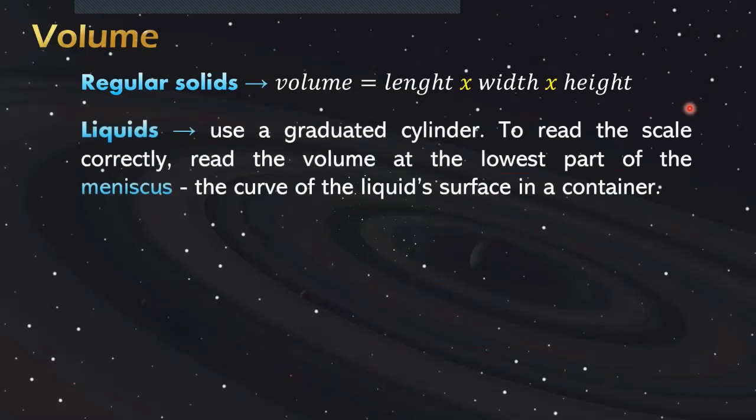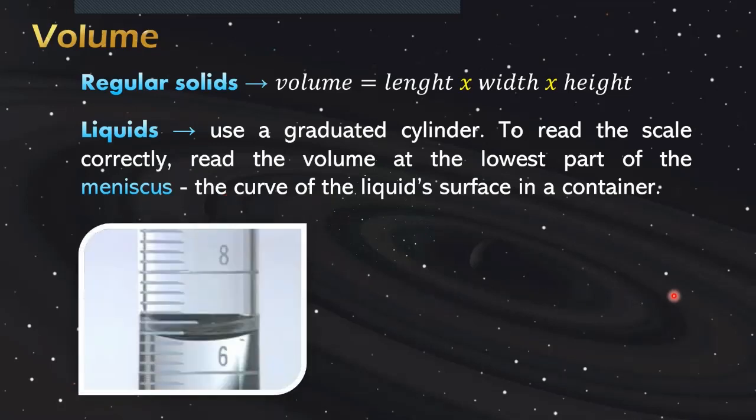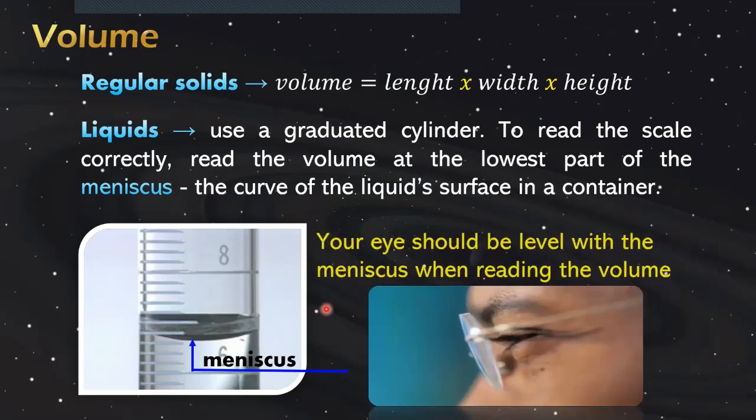To measure the volume of liquids, we use a graduated cylinder. To read the scale correctly, read the volume at the lowest part of the meniscus. It is the curve of the liquid surface in a container. Our eye should be level with the meniscus when reading the volume for us to have a correct measurement.